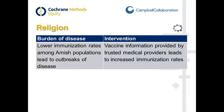For religion, an example is that there are lower immunization rates among certain populations like Amish populations, which can lead to outbreaks of disease. But vaccine information provided by trusted community members or trusted medical providers can actually increase immunization.